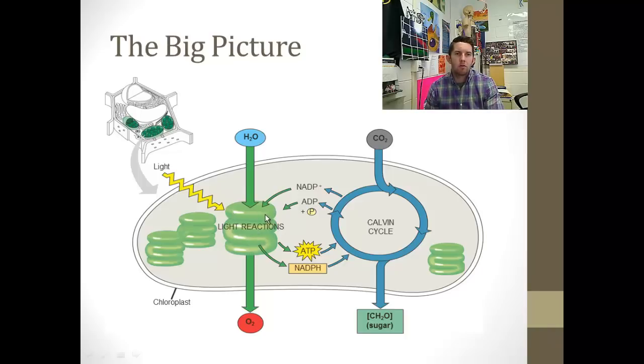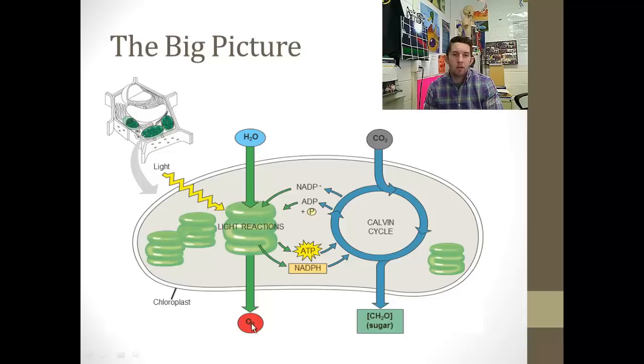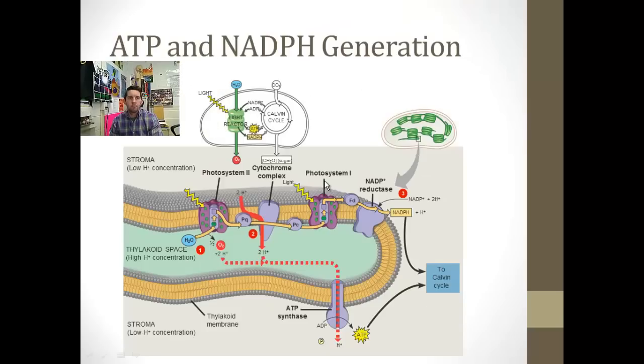The light reactions in these thylakoid membranes produce adenosine triphosphate and the coenzyme NADPH to help run the Calvin cycle. Water gets split in the photoexcitation within the thylakoid membranes. We have oxygen being released as a waste product, and we move on to the Calvin cycle, which occurs in the stroma, the space outside the thylakoid membranes.